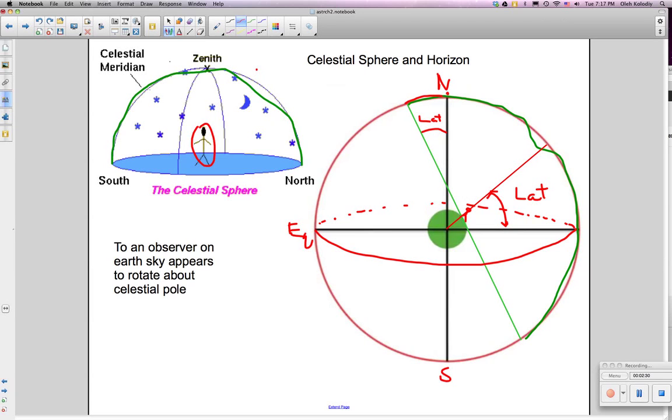Now, if the observer looks at a star directly overhead, say right over here, he will find that that star is also at his latitude, at the angle which is his latitude, and that that star, as the earth rotates, goes around a circle like this.